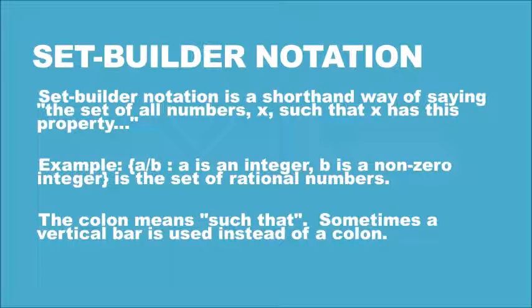Next one is the set builder notation, in which it is a shorthand way of saying the set of all numbers x, such that x has this property. Example: a is such that b.